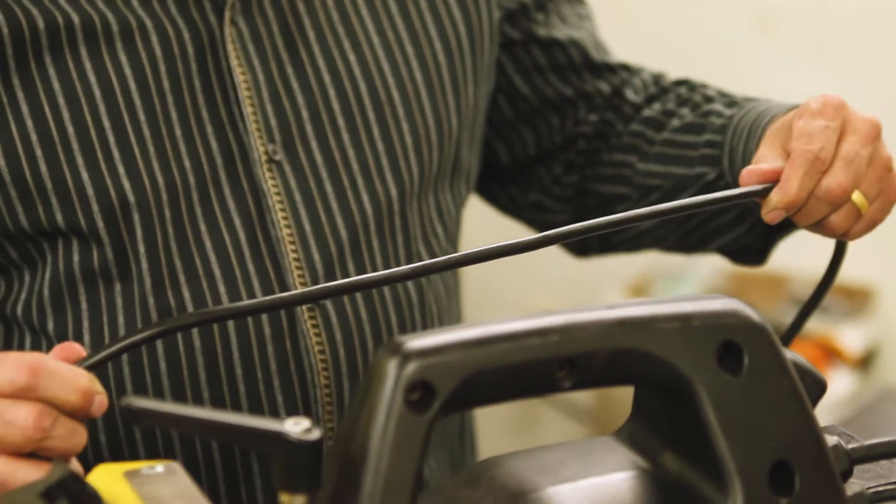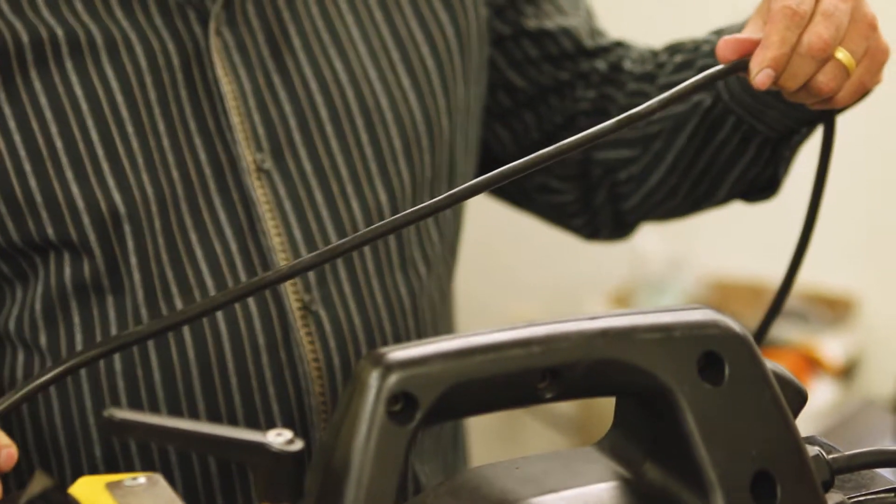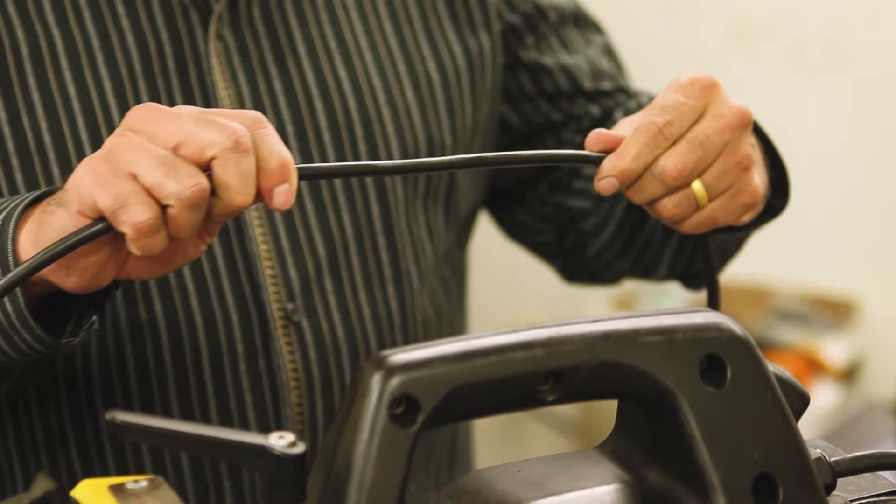Visually inspect the pendant remote cord for nicks, abrasions, and overall conditions. And again, replace it if necessary.